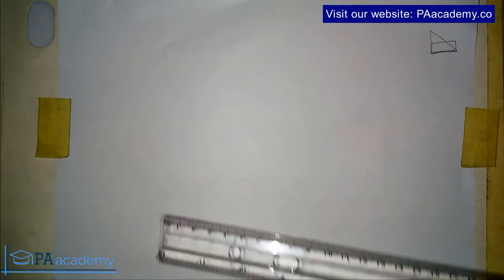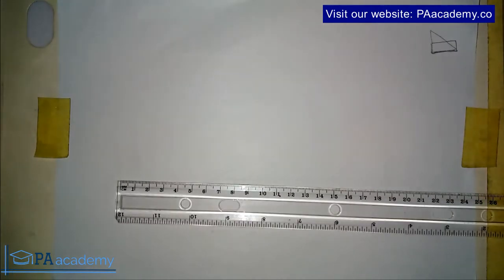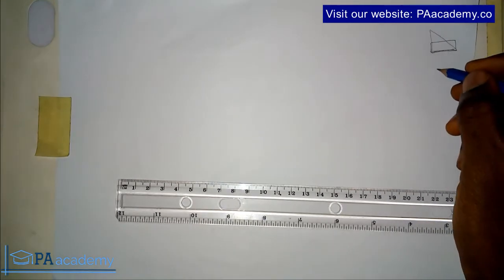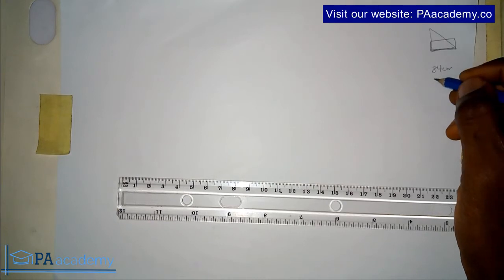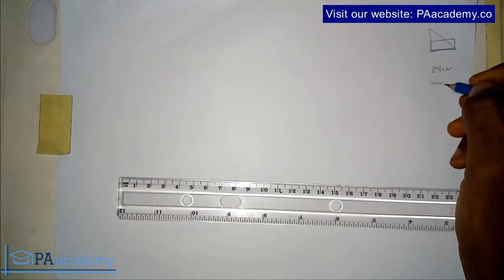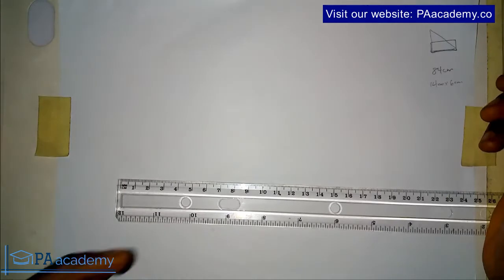So to start with, like I said, we are given a rectangle. So we are going to be working with a rectangle of 84 cm². The rectangle that we are given is 84 cm², and that is 14 cm times 6 cm. So let me draw that.